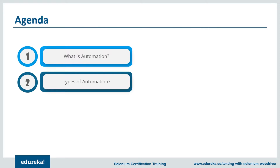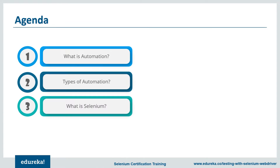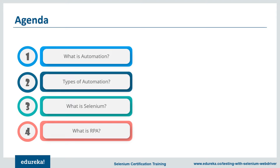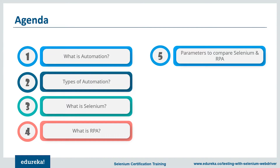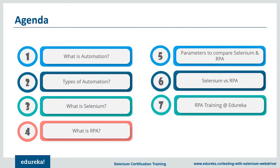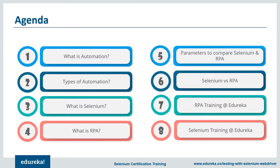We'll talk about the automation testing tool Selenium and learn its features. Then we'll look at the business process automation technology RPA and understand how it is used to automate repetitive tasks. Moving further, we'll discuss the parameters for comparing both Selenium and RPA, talk about their similarities, and finally wrap up by comparing them based on those parameters.